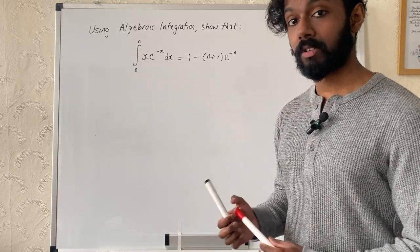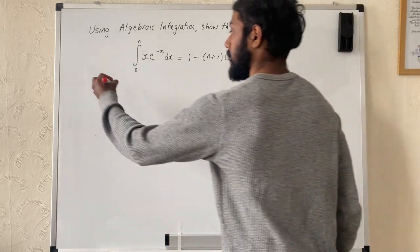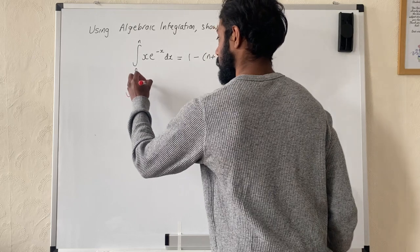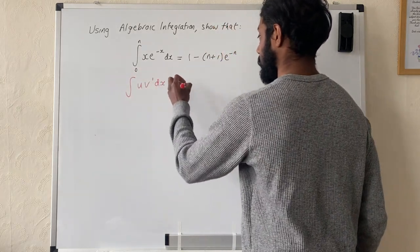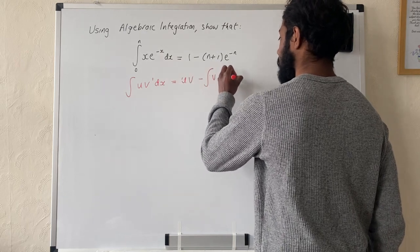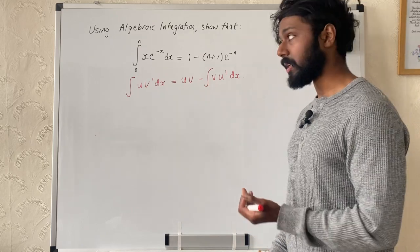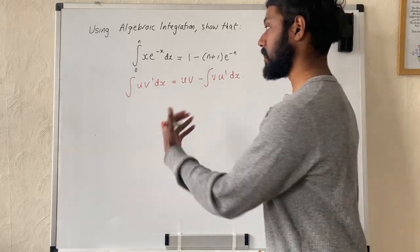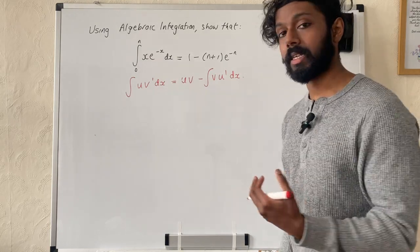Now the integration by parts formula, which is given to you in the formula booklet, is: the integral of u v-prime dx equals uv minus the integral of v u-prime dx. One common issue students have when doing integration by parts is recognising which function is their u and which one is their v-prime.